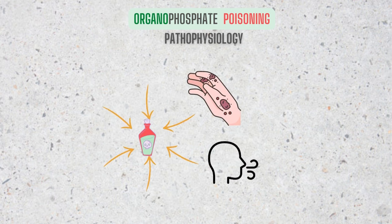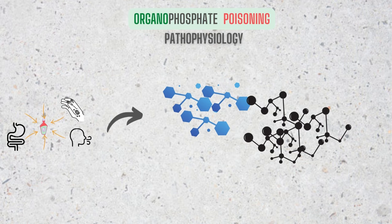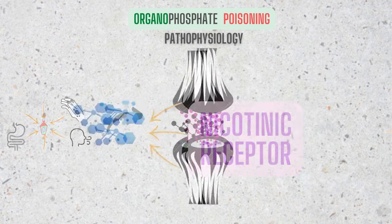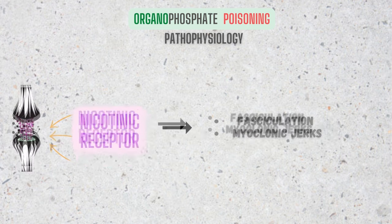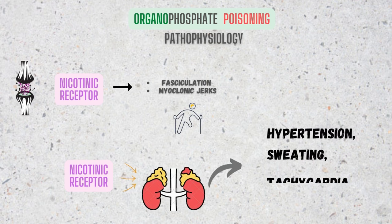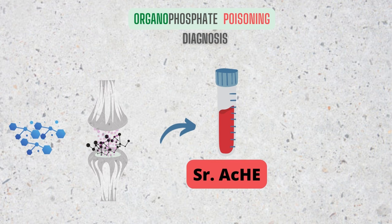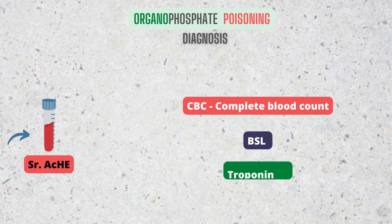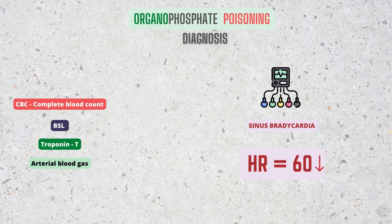Organophosphate molecules can be absorbed via the skin, inhalation, or the gastrointestinal tract. Once absorbed, the molecule binds to an acetylcholinesterase molecule in red blood cells, making the enzyme inactive. This leads to an overabundance of acetylcholine within synapses and neuromuscular junctions. Overstimulation of nicotinic receptors at neuromuscular junctions can lead to fasciculations and myoclonic jerks, eventually leading to flaccid paralysis due to depolarizing block. Nicotinic receptors in the adrenal glands may cause hypertension, sweating, tachycardia, and leukocytosis with left shift. Blood work should include CBC, glucose levels, troponin, liver and renal function, and arterial blood gas. The ECG will reveal sinus bradycardia due to parasympathetic activation.